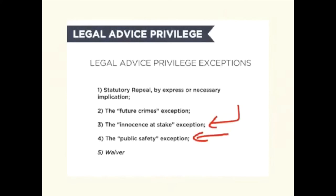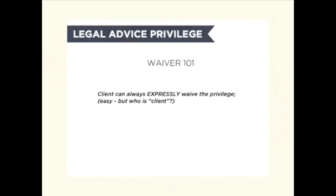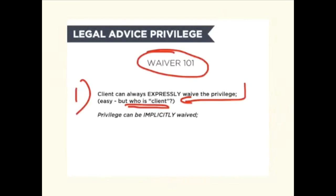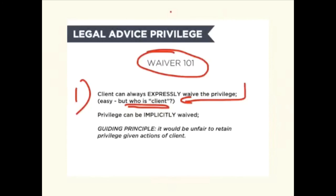The exception that comes up most frequently is waiver. The rules governing waiver are exceptionally complex, so here are the basics. First, the client can always expressly waive the privilege — as long as they know what they're relinquishing, they can waive, and sometimes it is in their interest to do so. The harder question is who is the client — with group clients like a board of directors, things get complicated. The harder part is that privilege can also be implicitly waived. The golden thread of all these waiver situations is: it would be unfair to keep the privilege because of something the client did.